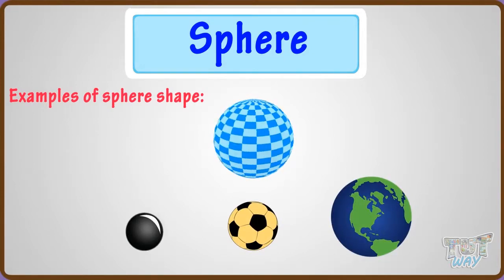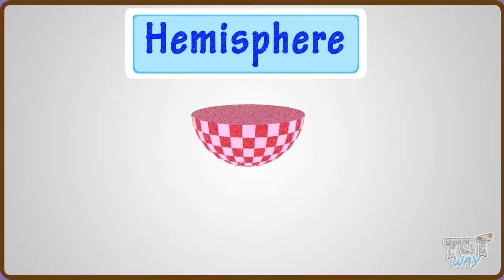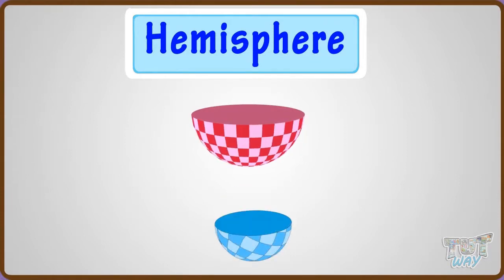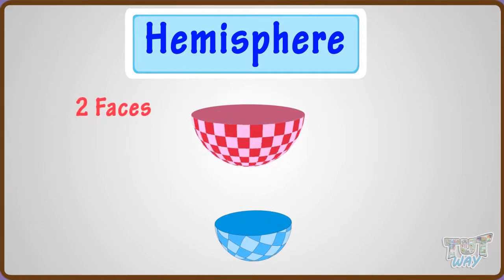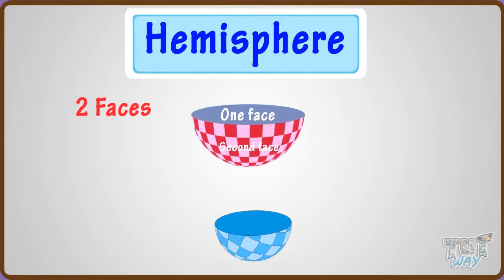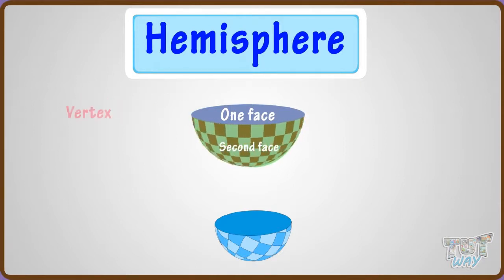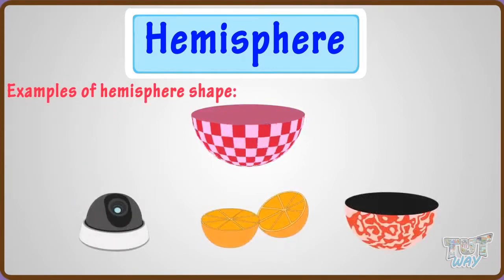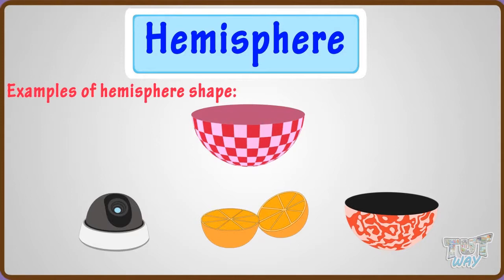Now, let's learn another shape — hemisphere. Hemisphere refers to half of a sphere. It has two faces: one is a flat surface which is completely round, and the other is a curved surface. It has no vertex, and it has one round edge. These are a few objects which are hemispherical in shape.